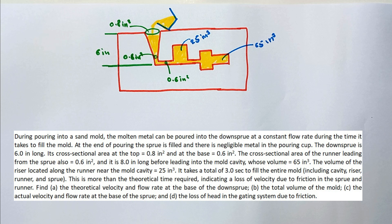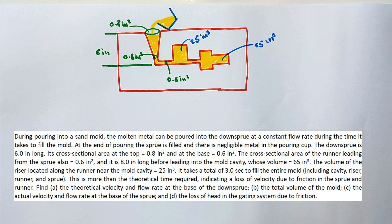The downhill sprue is 6 inches long. Its cross-sectional area at the top is equal to 0.8 square inches and at the base, 0.6 square inches. The cross-sectional area of the runner leading from the sprue is also 0.6 square inches in cross-section and it is 8 inches long, before leading into the mold cavity whose volume is 65 cubic inches. The volume of the riser located along the runner near the mold cavity is equal to 25 cubic inches. It takes a total of 3 seconds to fill the entire mold including cavity, riser, runner, and sprue.